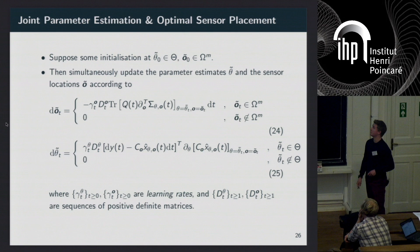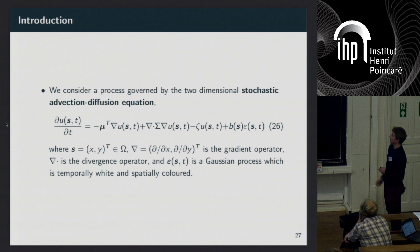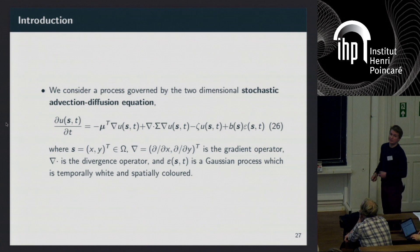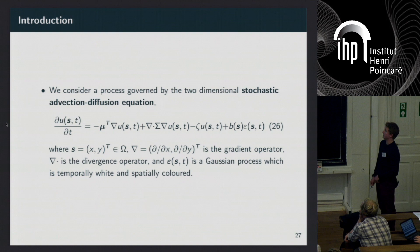That's the background — let's look at an application. We consider this 2D stochastic advection-diffusion equation, which satisfies the model setup we had earlier. It's linear in the process u, and it's relatively flexible in the sense that for different choices of parameters mu, sigma, and zeta, we can encode quite a lot of different types of behavior using this equation.